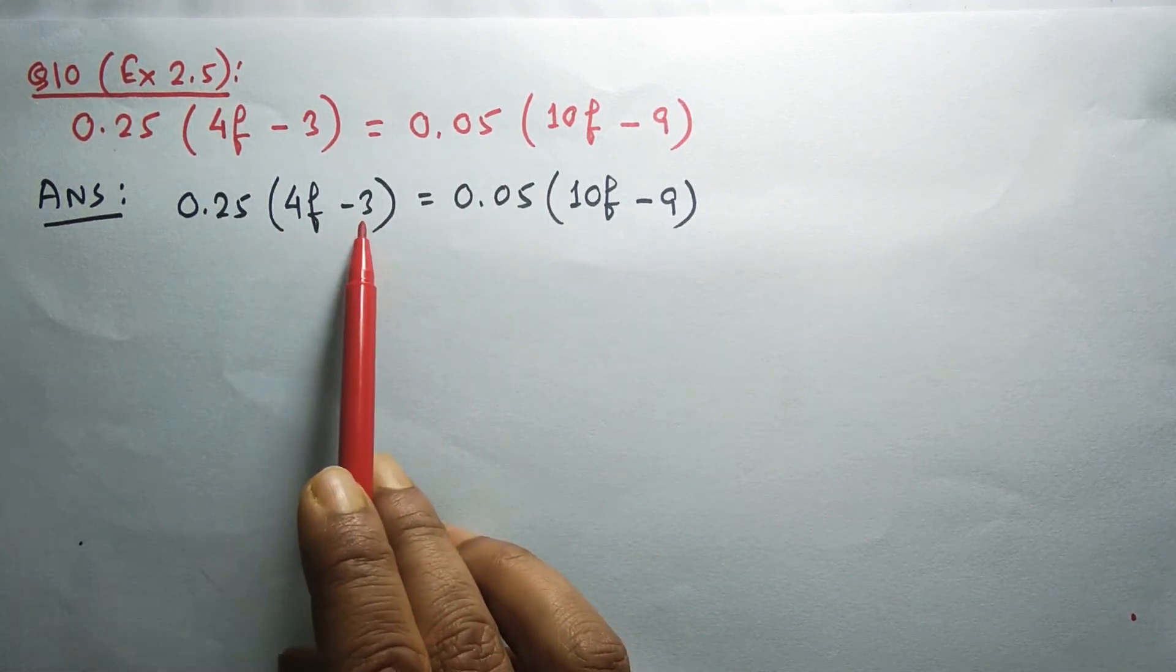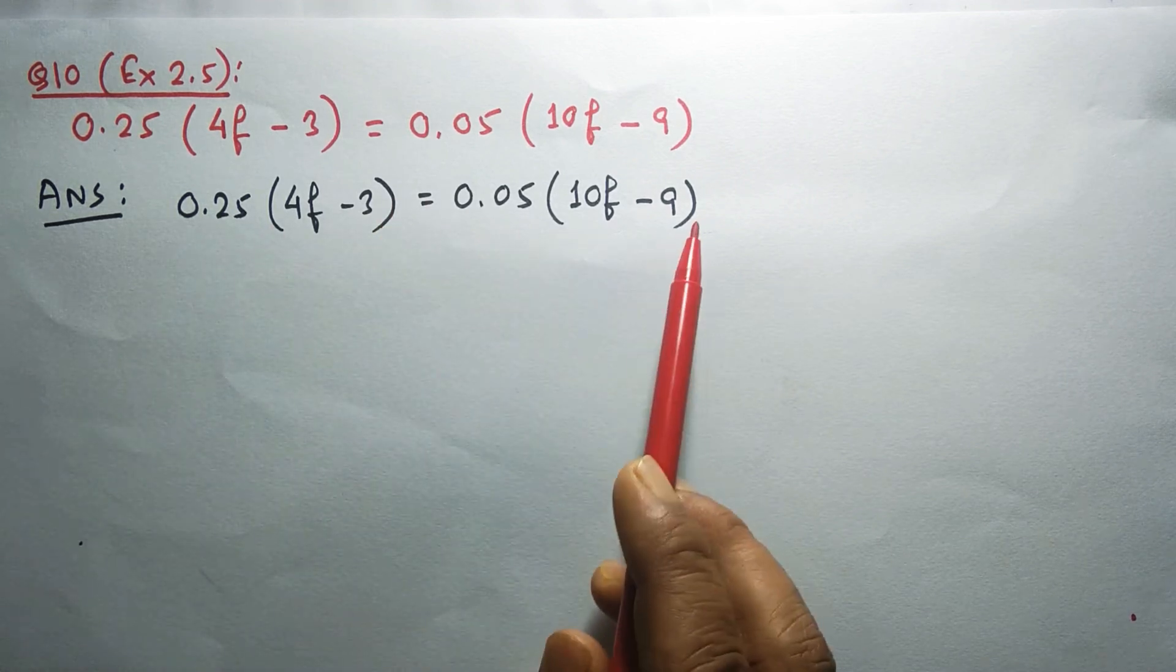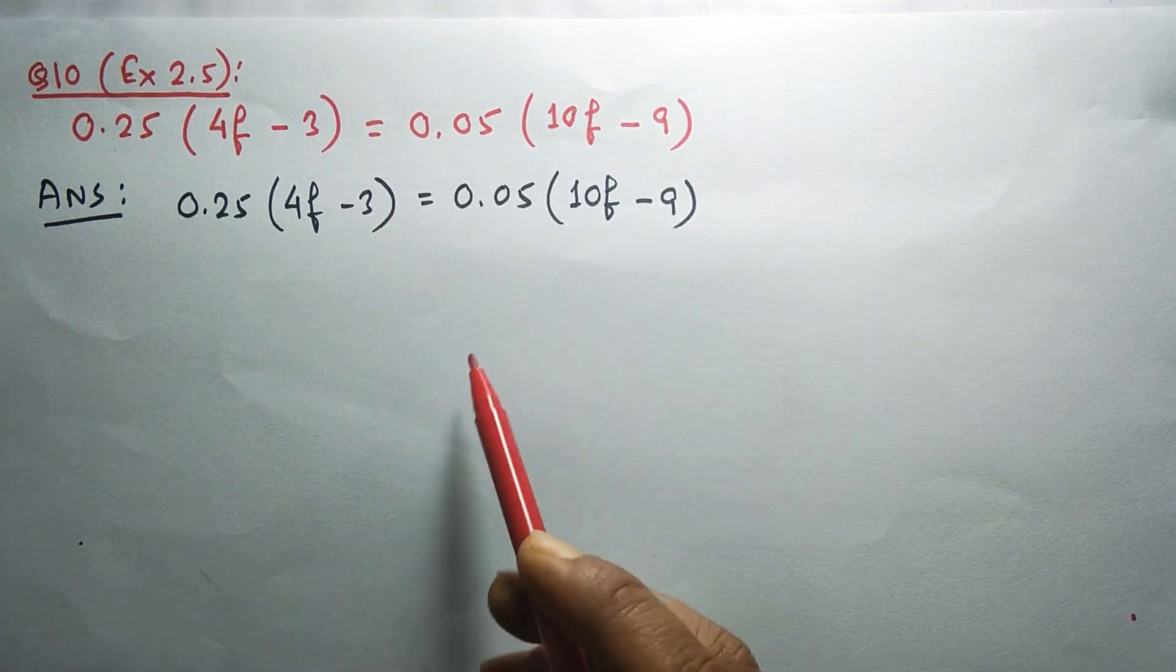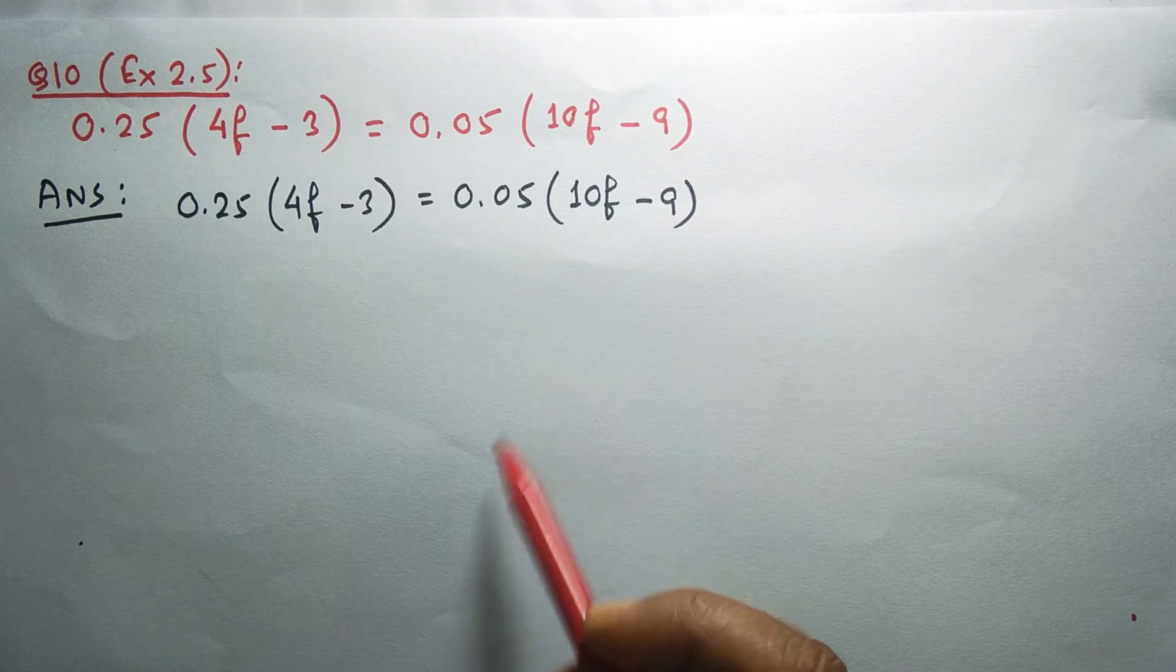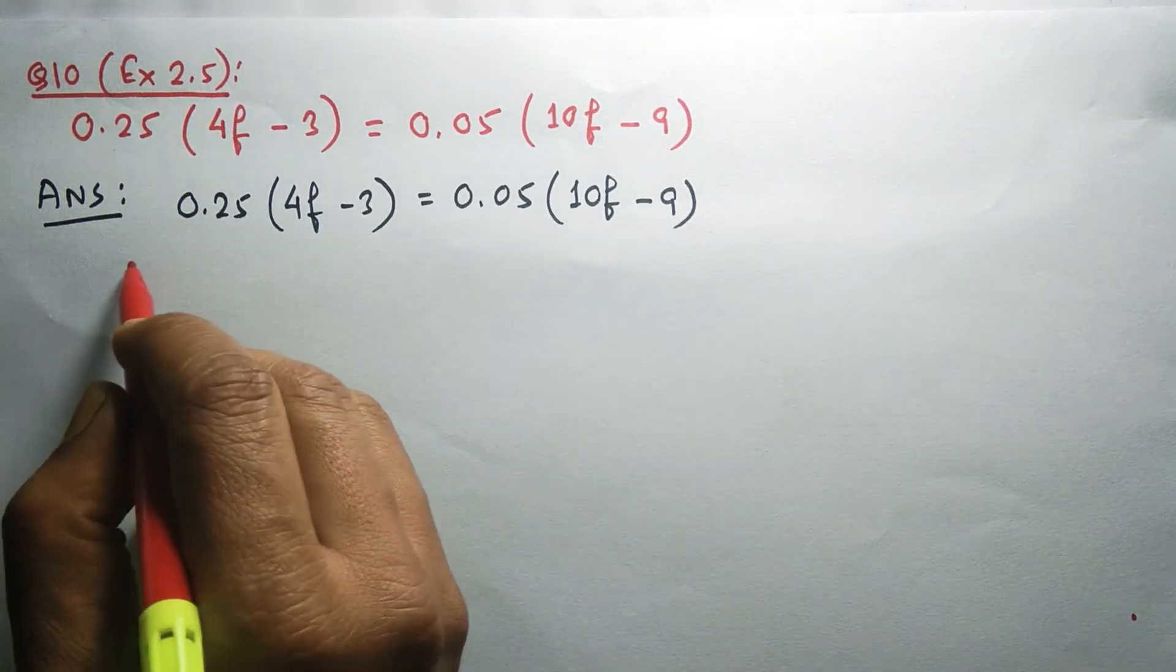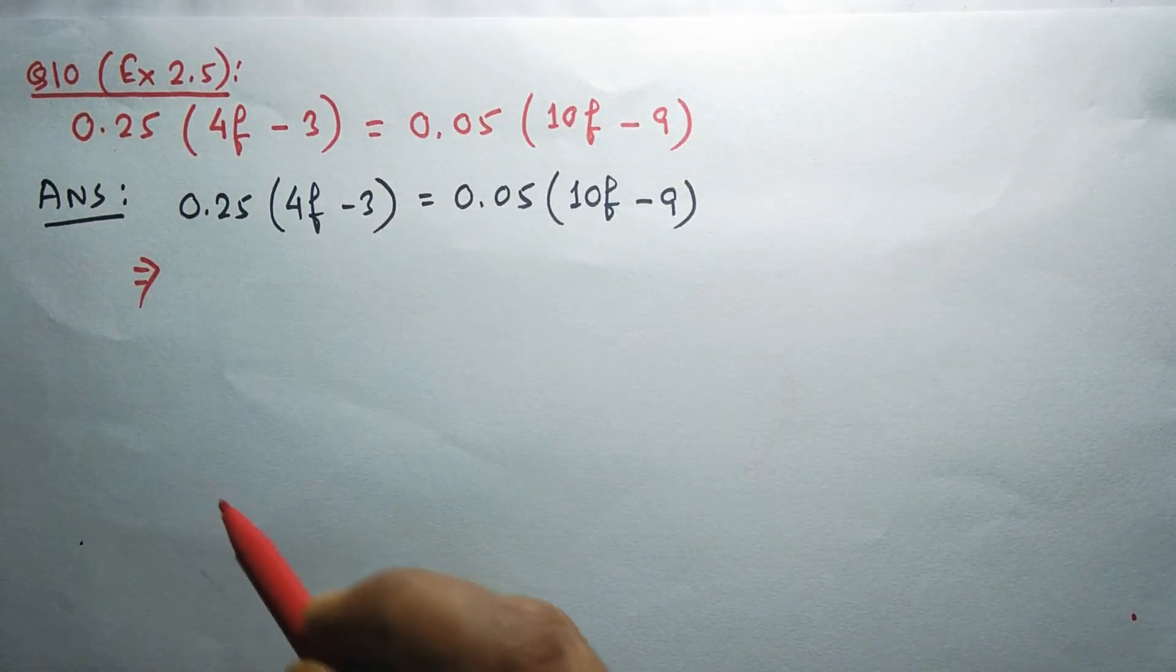We'll be opening the brackets on the left and right, then simplify to get the value for f. One thing you see in this question is you're having decimal numbers.